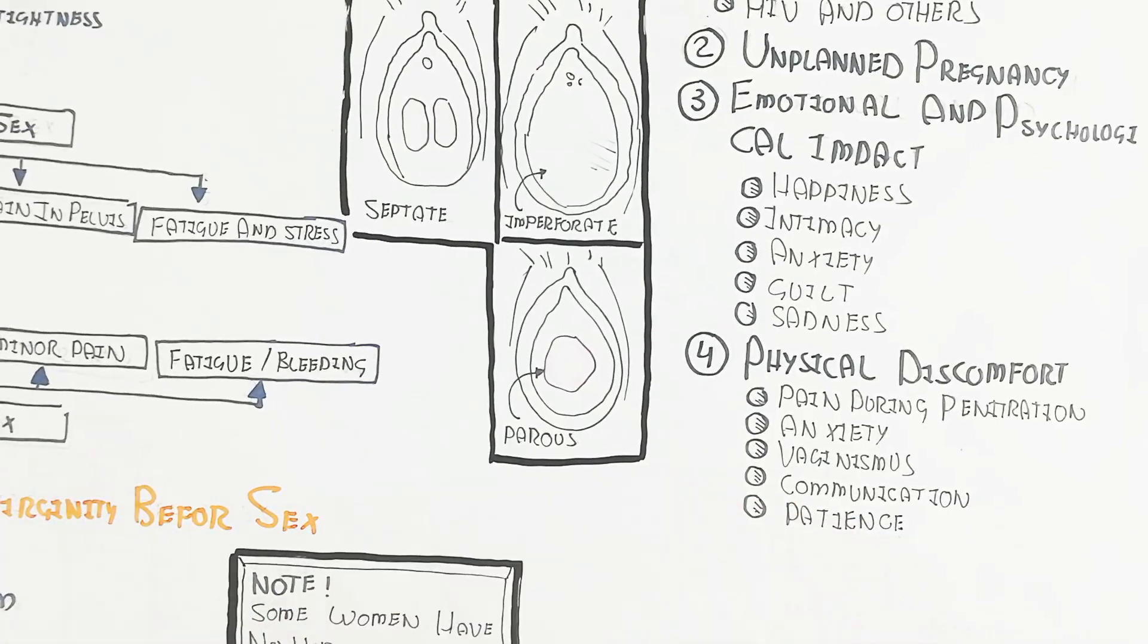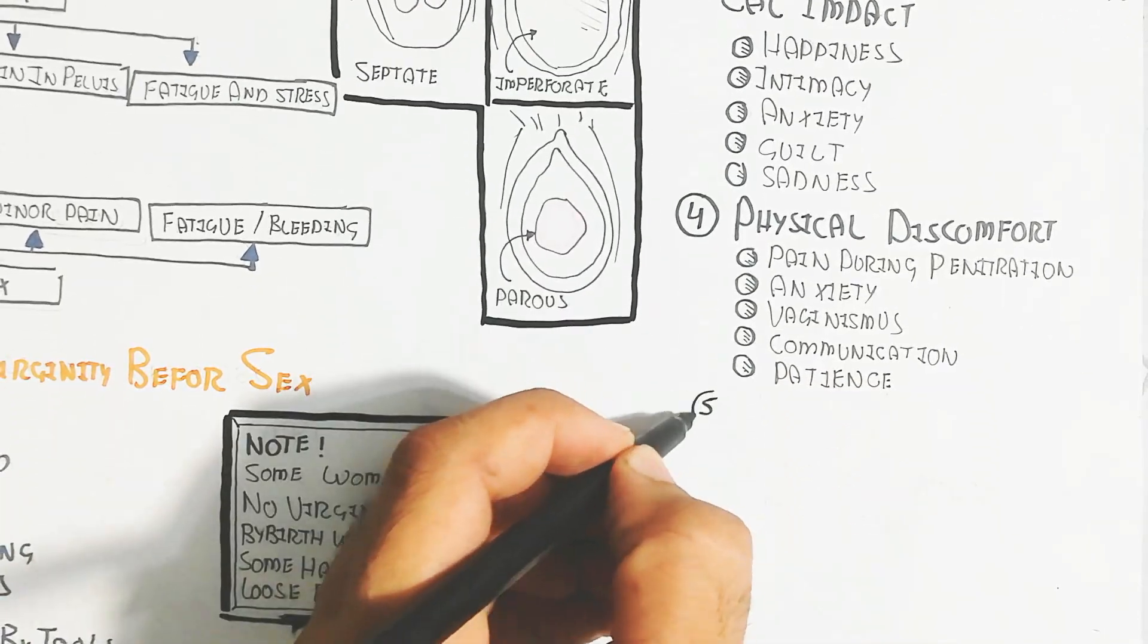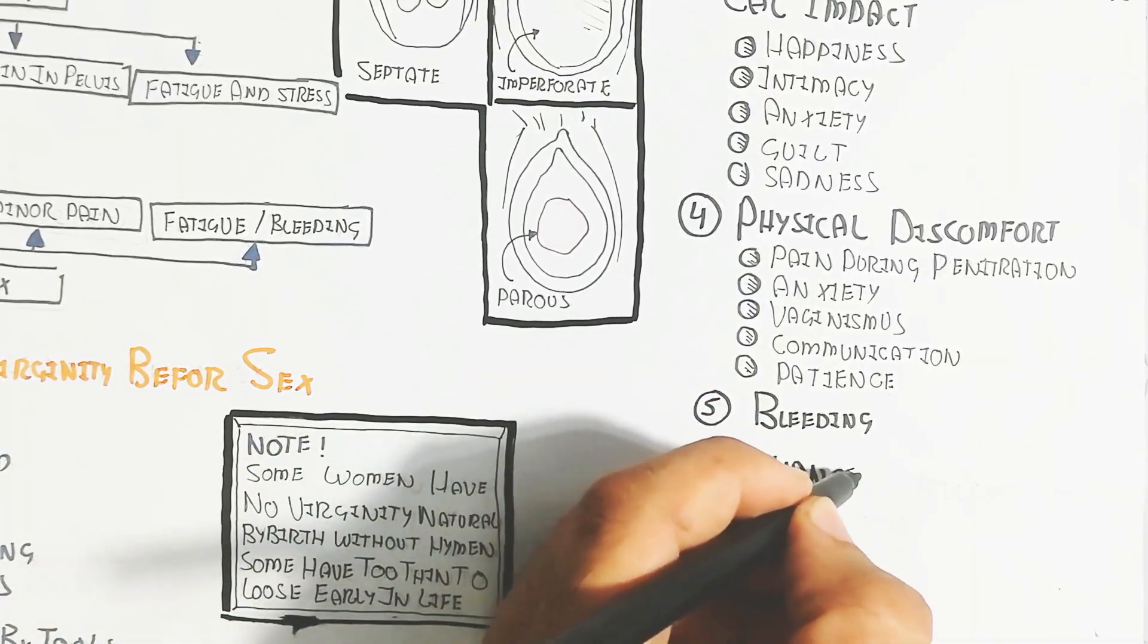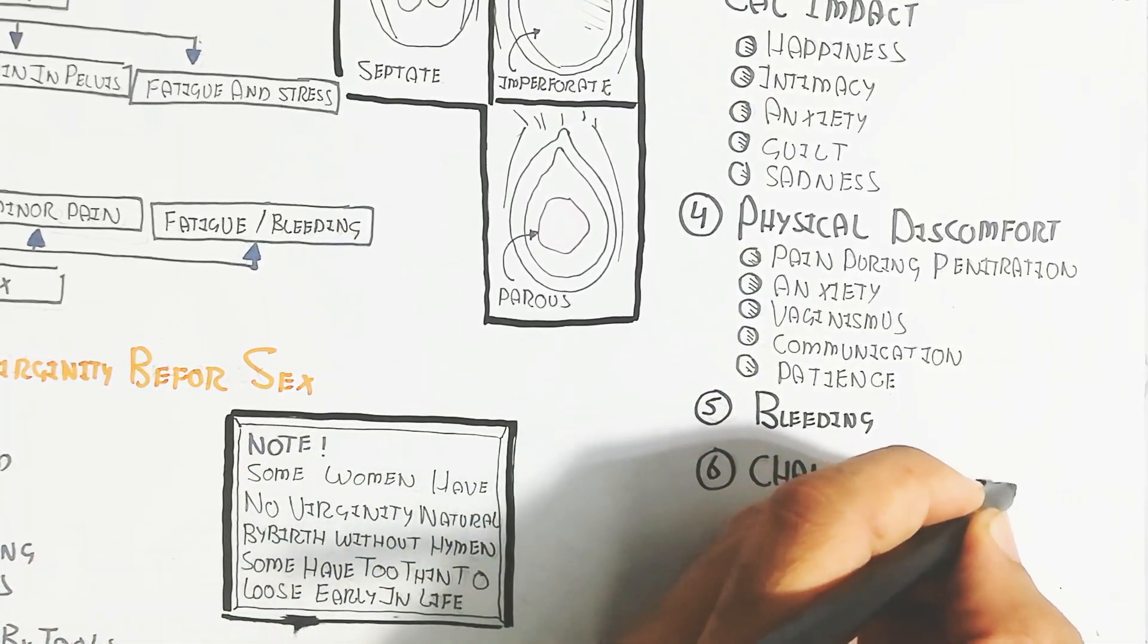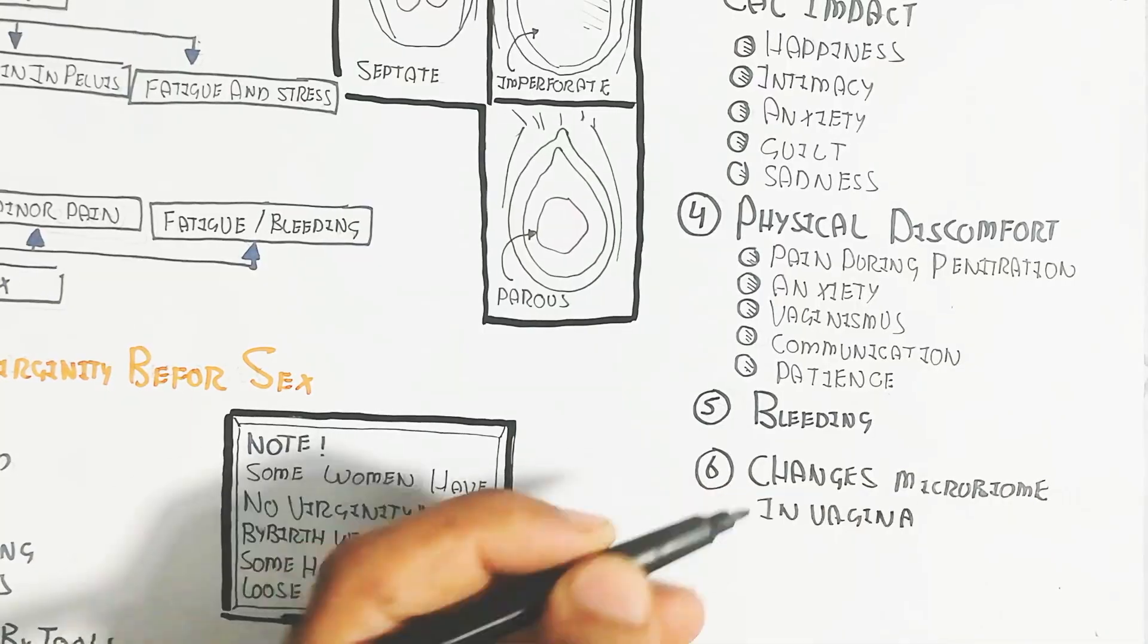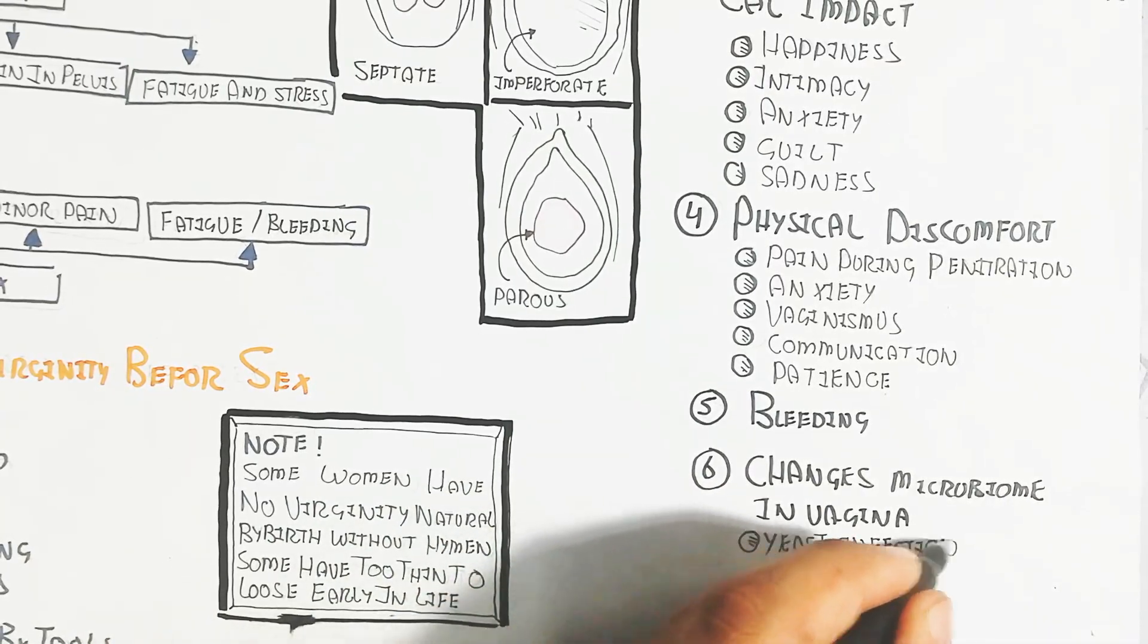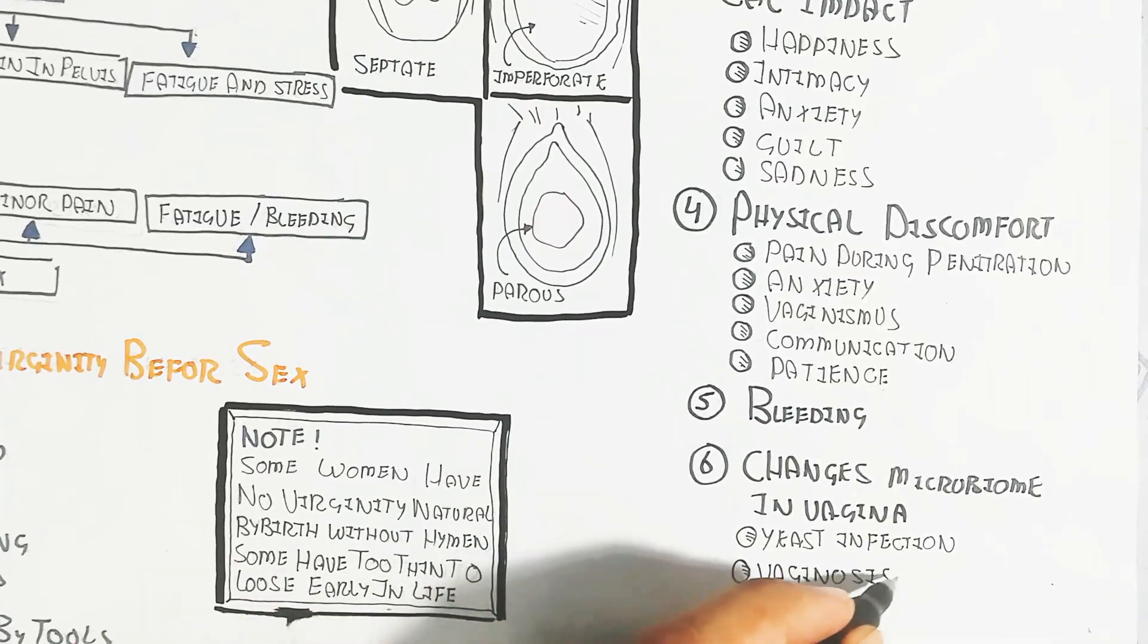Bleeding is also part of virginity loss. Changes in microbiome in vagina can cause yeast infection, vaginosis, and other diseases. Remember these complications after virginity loss.